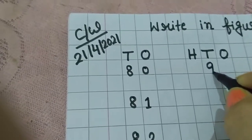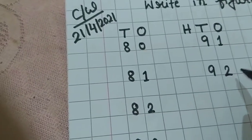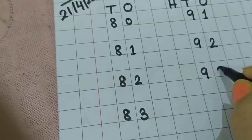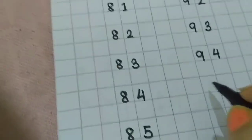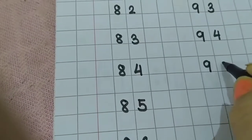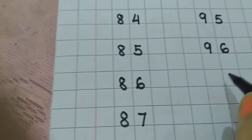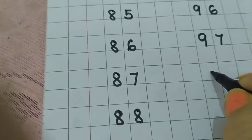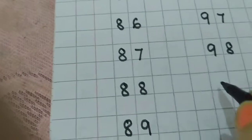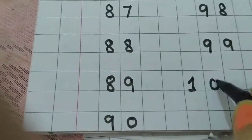Then 91. 92. 93. 94. 95. 97. Then 98. 99. Then 1, 0, 0 - 100.